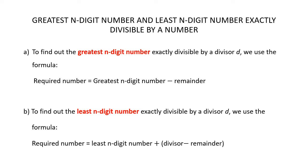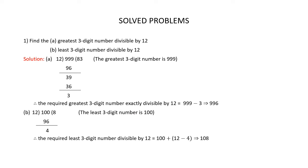Remember these two formulae correctly. Question 1: Find the greatest 3-digit number divisible by 12. Also find the least 3-digit number divisible by 12. The greatest 3-digit number is 999, but 999 is not exactly divisible by 12. When you divide 999 by 12, you get 3 as the remainder.